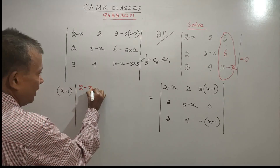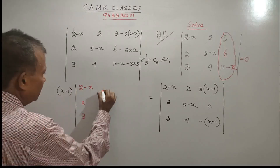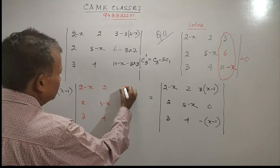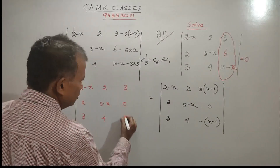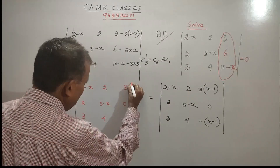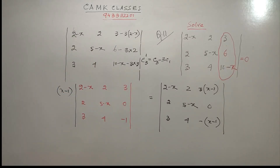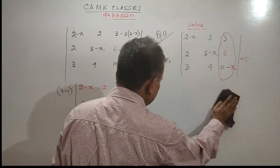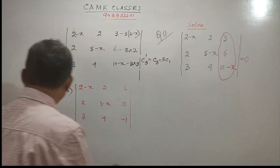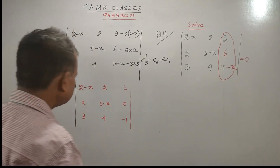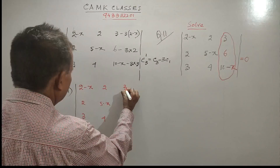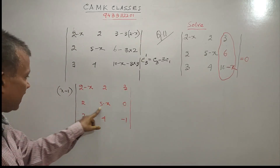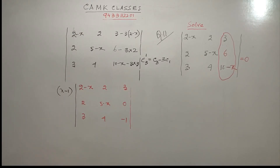After taking (x minus 1) outside, what remains in the determinant is: first column and second column unchanged. Third column becomes: 3, zero, minus 1. The rows are: row 1 is (2 minus x), 2, 3; row 2 is 2, (5 minus x), 4; row 3 is 3, 0, minus 1. Now we will apply another row operation.